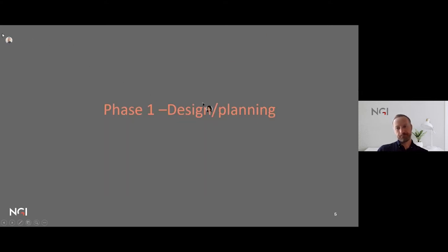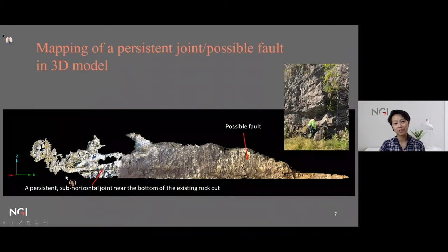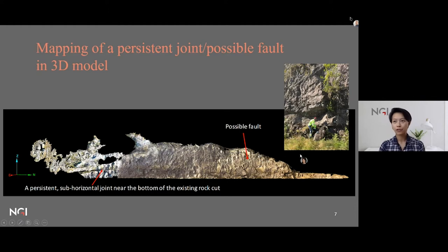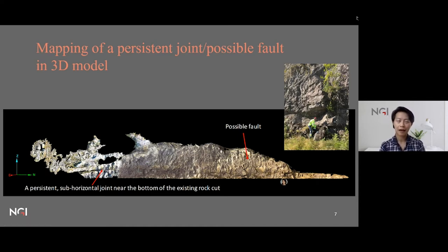In the first phase before blasting of the rock cut, we performed semi-automatic joint mapping using Maptek software. In the existing rock cut, a persistent horizontal joint is visible near the bottom that could possibly develop into a fault. It's difficult to access this part of the slope in the field as it's partly covered by rock support nets, but using a 3D model you can get a better overview and a larger-scale perspective of the whole rock cut.